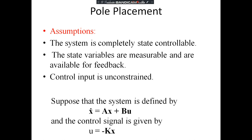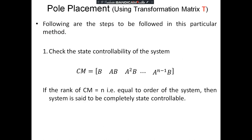We will consider the system defined by the state equation X-dot = AX + BU, with the control signal given by U = −KX. There are steps to follow to design or obtain pole placement using the transformation matrix.